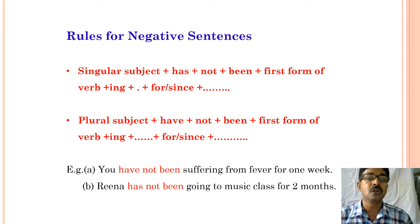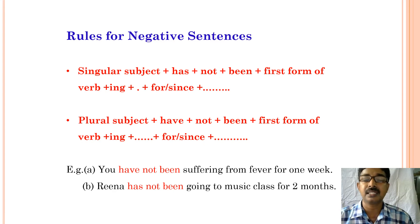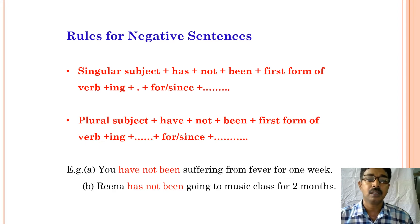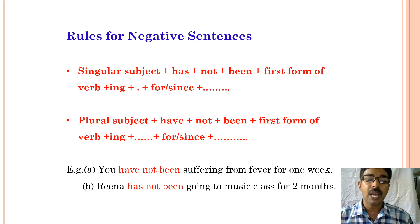Sometimes we also frame negative sentences. The structure is: singular subject plus has plus not plus been plus first form of the verb plus -ing plus since or for plus object. Or plural subject plus have plus not plus been plus first form of the verb plus -ing plus since or for plus object. Examples: you have not been suffering from fever for one week. Rain has not been going to music classes for two months.